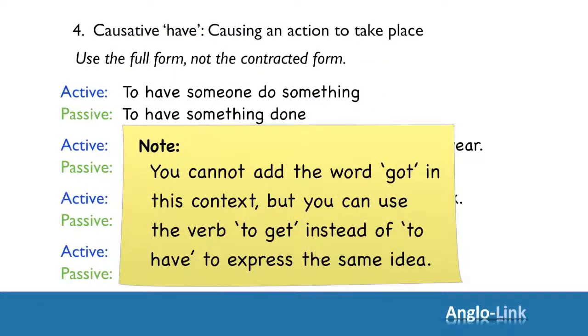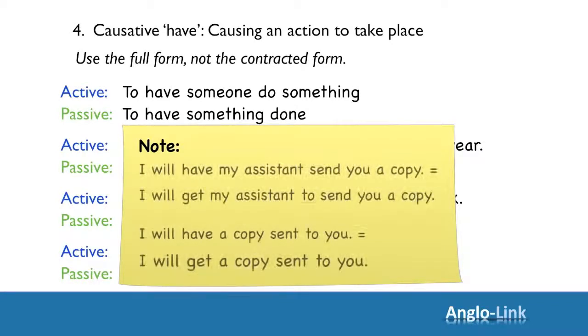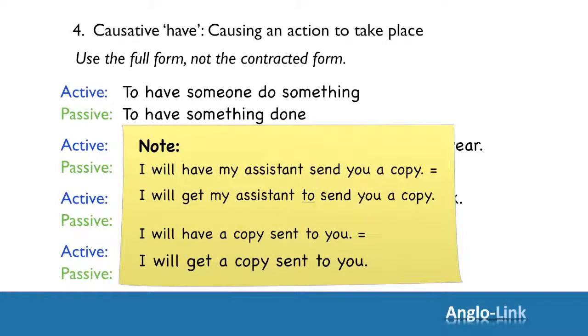Note that you cannot add the word GOT in this context. But you can use the verb TO GET instead of TO HAVE to express the same idea. For example, instead of I will have my assistant send you a copy, you can say I will get my assistant to send you a copy. Notice that after GET we use the infinitive WITH TO. And in the passive form I will have a copy sent to you or I will get a copy sent to you.